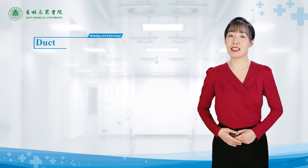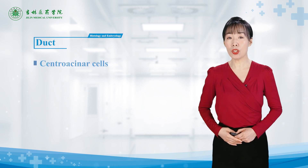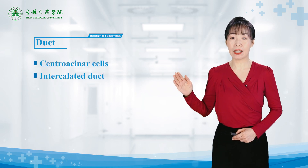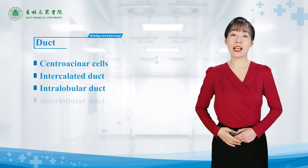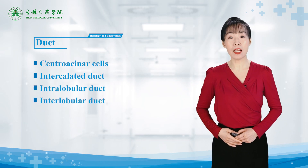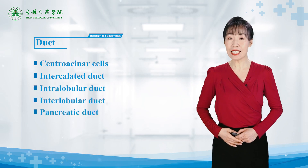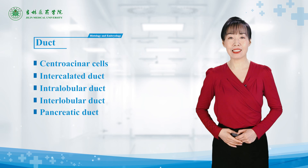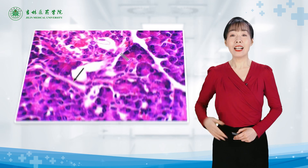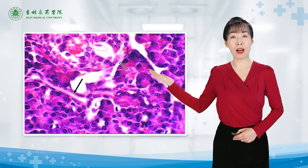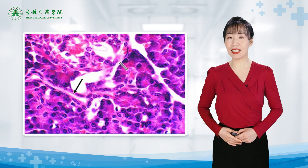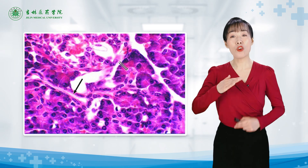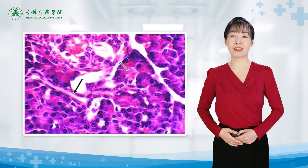The pancreatic duct system includes the intercalated duct, intralobular duct, interlobular duct, and the main pancreatic duct. In this micrograph, the single arrow shows the intercalated duct, which is relatively longer.